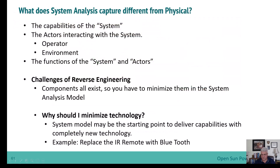One thing I want to talk about first is why this differs from the physical architecture. It focuses on the capabilities of the system, the actors interacting with the system, the operating environment, and the functions of the systems and the actors. The challenge of reverse engineering is that components all exist, so you have to minimize them when doing the system analysis model. The reason to minimize is that the system model may be the starting point to deliver new capabilities with completely new technology, so you don't want to introduce a lot of technology into the system analysis model.